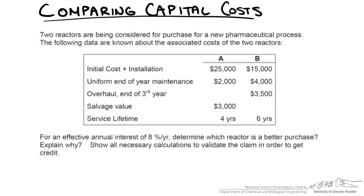How are you going to compare two different pieces of equipment based on initial cost, installation cost, maintenance, salvage at a certain time, and how long the lifespan of each piece of equipment might be?